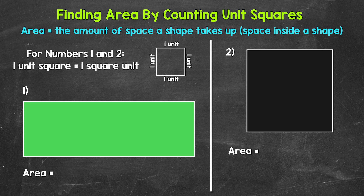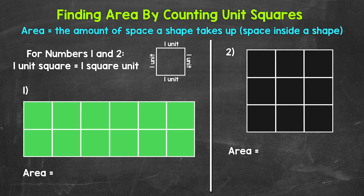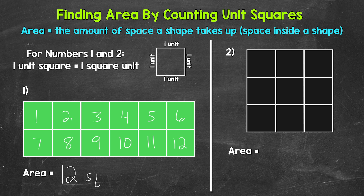Let's cover these shapes with unit squares and find their areas. For number one, how many unit squares cover the rectangle? Well, we have 1, 2, 3, 4, 5, 6, 7, 8, 9, 10, 11, 12. So the area of this rectangle is 12 square units.